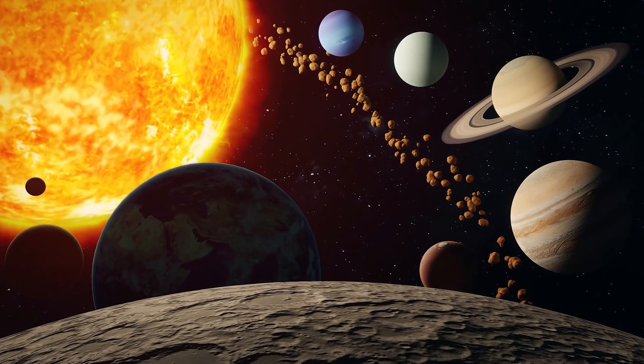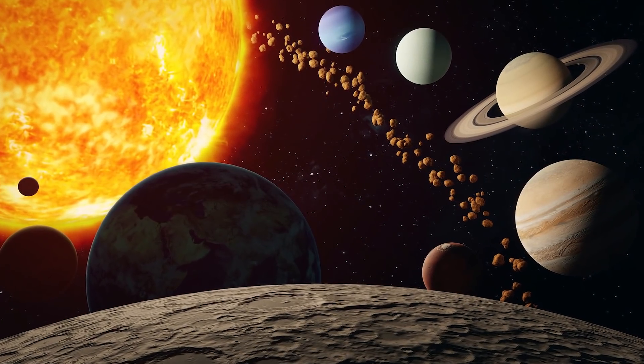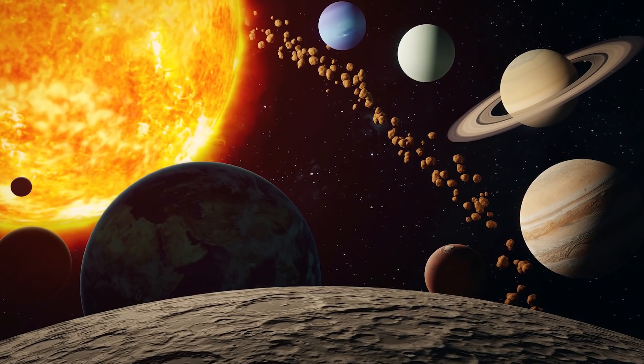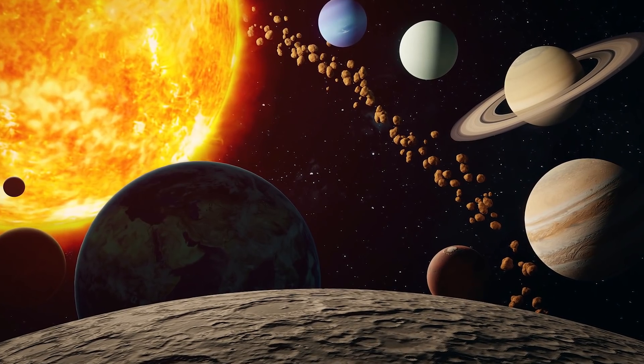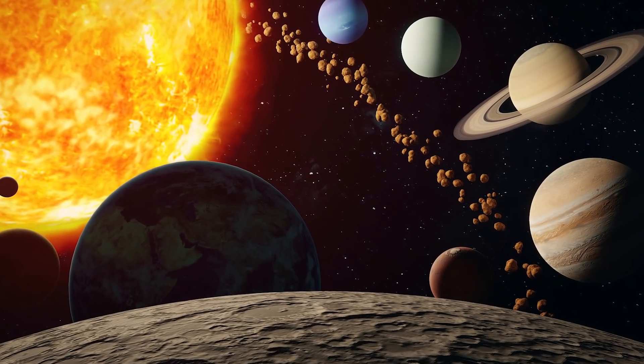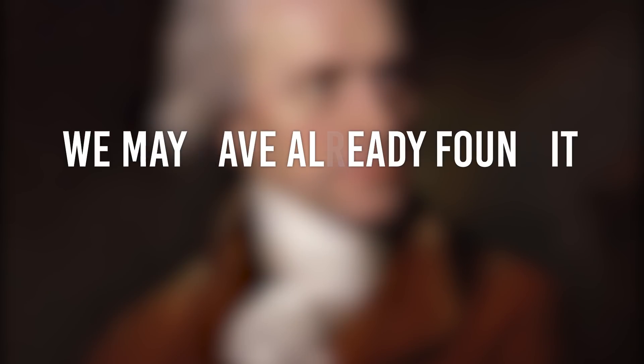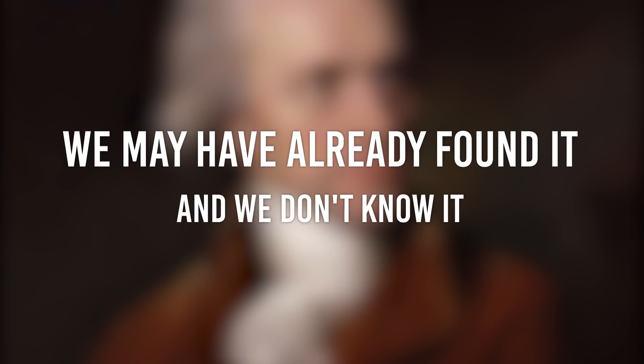As you can see, finding a planet in the farthest areas of the solar system is a titanic task, although there is a possibility that Planet 9 has already been found, and we have not yet realized it. We may have already found it, and we don't know it.